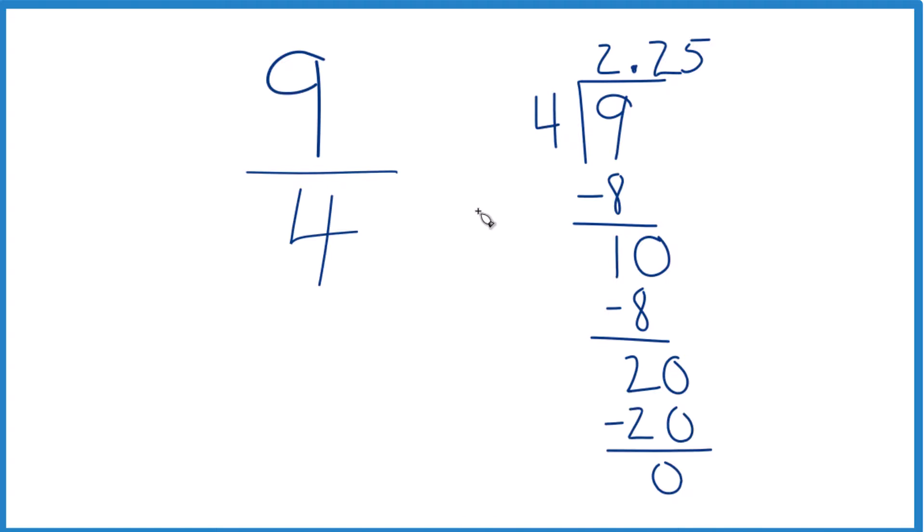So the answer to our question: the fraction nine-fourths equals the decimal 2.25, and these are equivalent. They have the same value, they're just written in different formats. This is Dr. B converting nine-fourths, the fraction, to a decimal. The answer, 2.25. Thanks for watching.